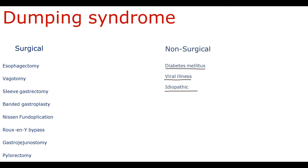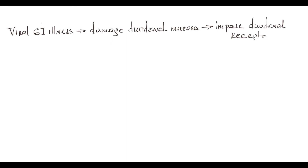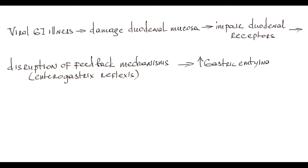Dumping syndrome can also occur after viral illness. It is believed that viral gastrointestinal illness damages duodenal mucosa and causes impairment in the function of duodenal receptors. This disrupts the duodenal feedback mechanisms, also called enterogastric reflexes. Without duodenal feedback mechanisms, gastric emptying rate becomes uncontrollable, causing acceleration in gastric emptying rate and leading to dumping syndrome.